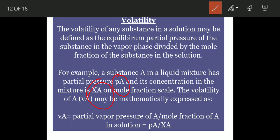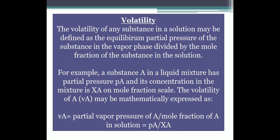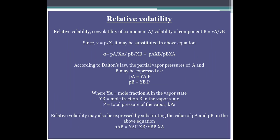The volatility of component A, that is Va, may be mathematically expressed as: Va equals the partial vapor pressure of A divided by the mole fraction of A in solution. Partial vapor pressure is denoted by Pa, so Va = Pa / xa. If you can't use volatility of any one compound alone, then we talk about relative volatility.